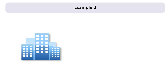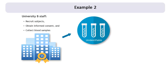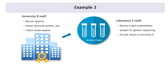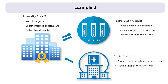Let's consider another example. University B is awarded an NIH grant for a randomized controlled trial of two different medical treatments. Research staff at University B will recruit research subjects, obtain informed consent, and collect blood samples from subjects in both treatment groups for genetic analysis. The genetic sequencing will be done by Laboratory X. The agents of Laboratory X will receive coded blood samples to use for sequencing and will not be able to link the samples back to individuals. Laboratory X will provide the results to the investigators at University B for analysis as part of the research project. Co-investigators at Clinic C will conduct the research interventions and document the findings that will be sent to the investigators at University B for analysis and reporting.